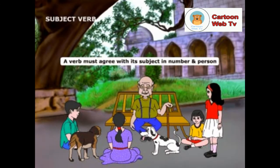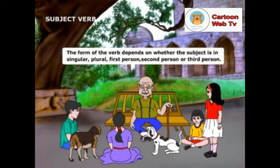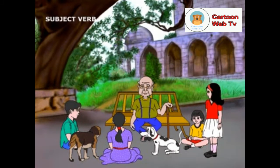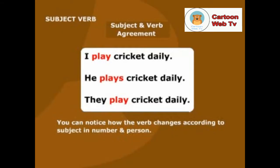A verb must agree with its subject in number and person. That is, the form of a verb depends on whether the subject is singular, plural, first person, second person or third person. Look at the following sentences as examples. You can notice how the verb changes according to subject in number and person.